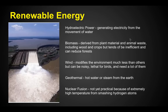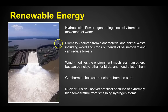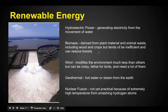Renewable energy: hydroelectric power generates electricity from the movement of water. Biomass is derived from plant material and animal waste, including wood and crops, but it tends to be inefficient and can reduce forests if you're cutting down wood to fuel power plants. However, biomass could be a viable option because a lot of what's left after extracting food from crops — material we wouldn't otherwise use — would be great for biomass.